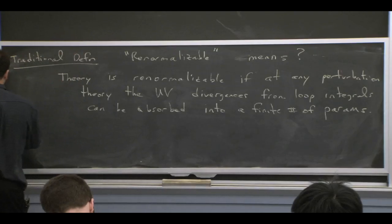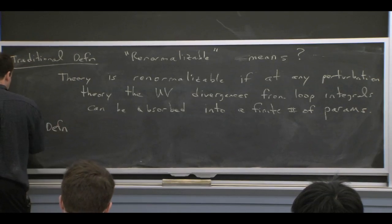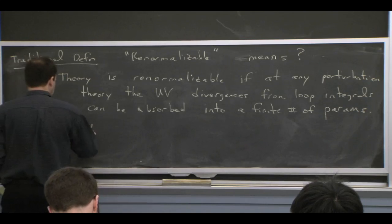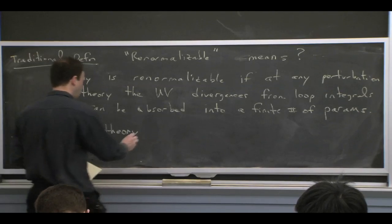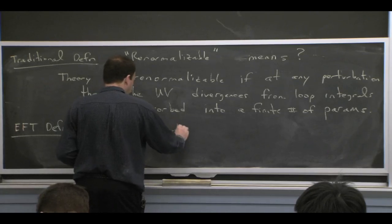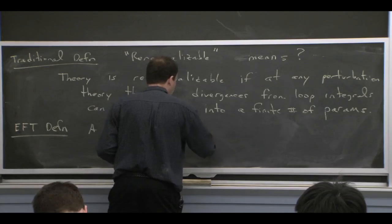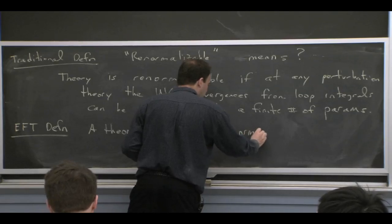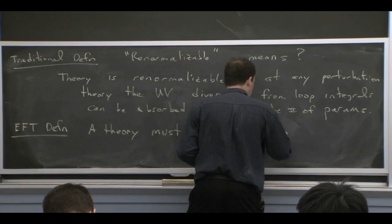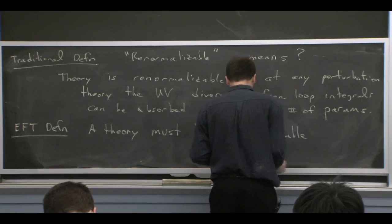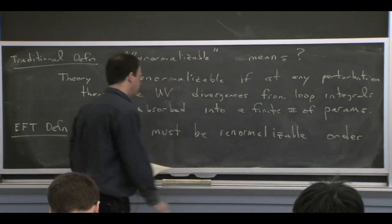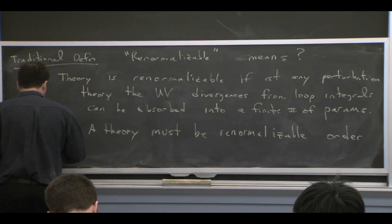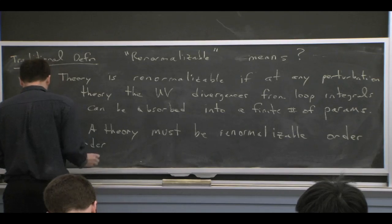What is the effective field theory definition of this? It's a little more general, because it brings in the idea of doing power counting. So the effective field theory's definition allows for the possibility of having an infinite number of parameters. But at any order that you truncate the theory, there should only be a finite number.